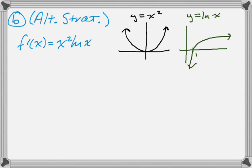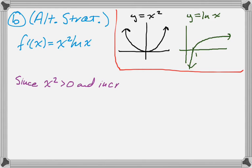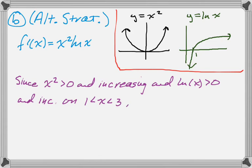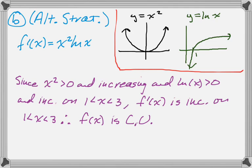And then for y equals natural log of x, which is the other factor, it's also positive and increasing. So I'm not going to use those graphs as my justification, but I am going to write up what those graphs represent. So x squared is greater than zero and increasing, and natural log of x is greater than zero and increasing on the interval from 1 to 3. That means that f prime must also be increasing on that interval. And if f prime is increasing, then we know f of x is concave up.